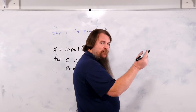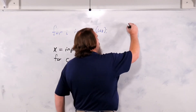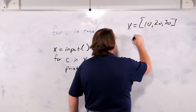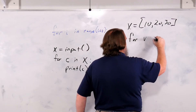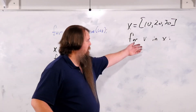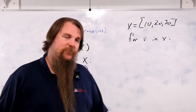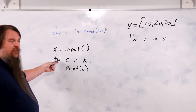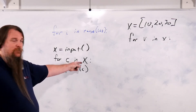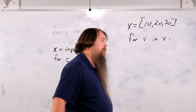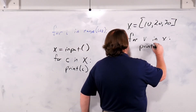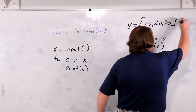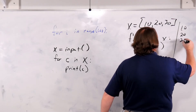What about with arrays? Yes, you can do the same thing with arrays. `x = [10, 20, 30]`, `for v in x` — why do I call it v? v means value. You'll notice this is the exact same syntax: `for variable in collection`. `print(v)`. So this will print 10, then 20, then 30.